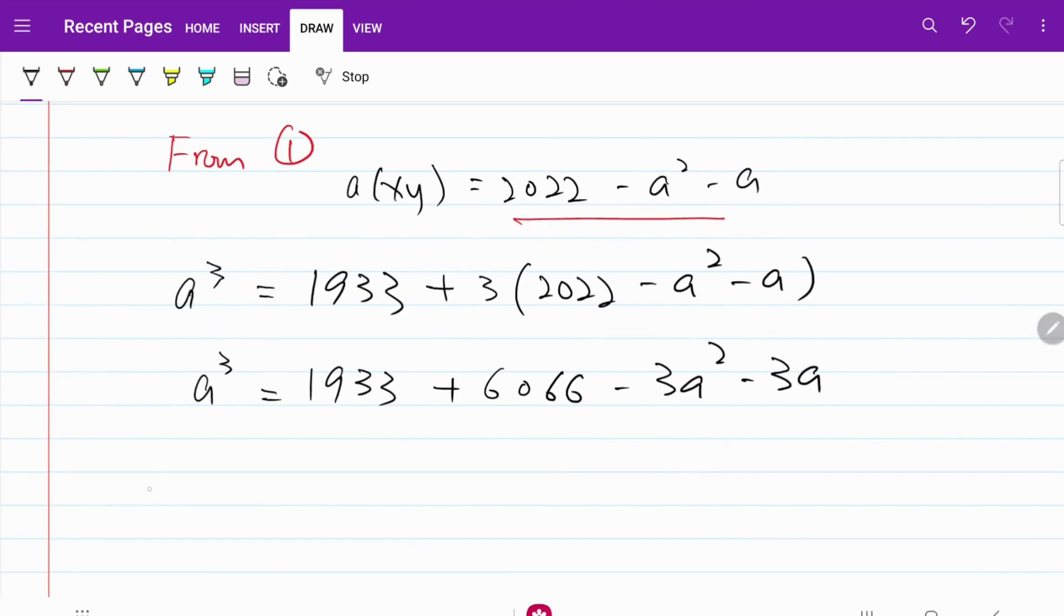what I have would be a cubed plus 3a squared minus 3a is equal to 7999.